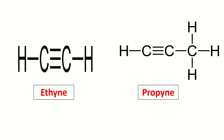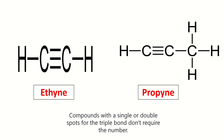We have exceptions here. We do not need to put a number before ethyne and propyne, because compounds with only a single possible location for the triple bond don't require a number.